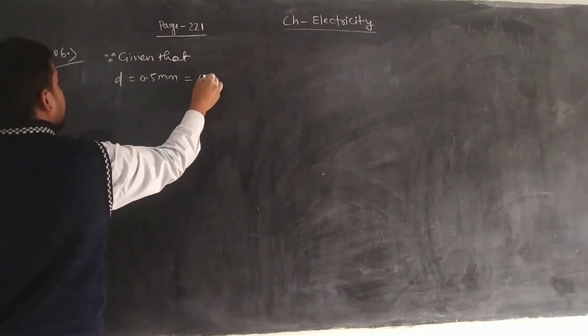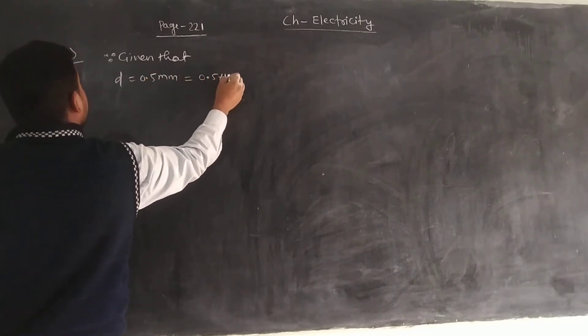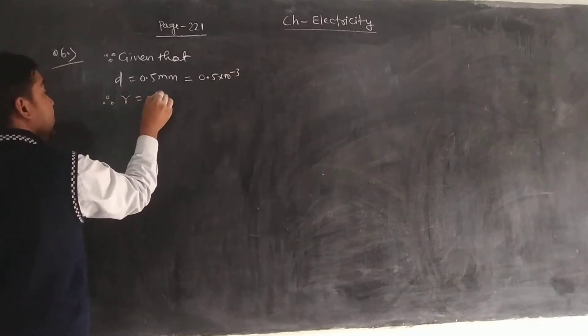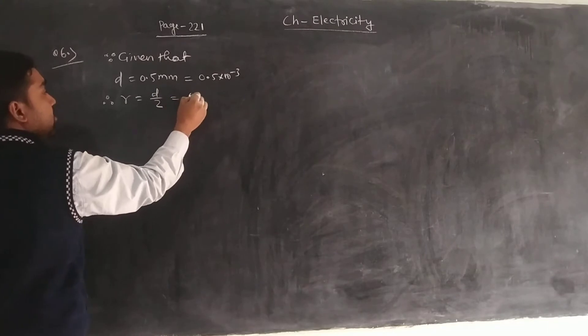The diameter is equal to 0.5 mm, which equals 0.5 times 10 to the power minus 3 meters. The radius is equal to diameter by 2, so this is 0.025.